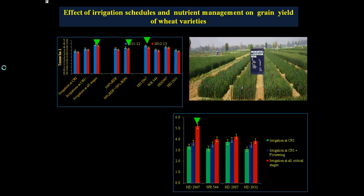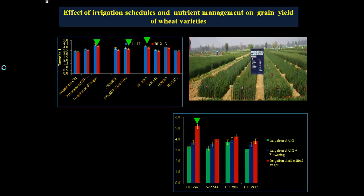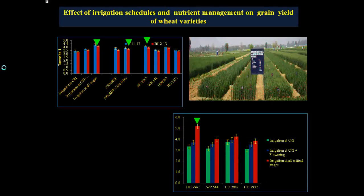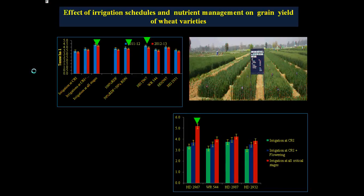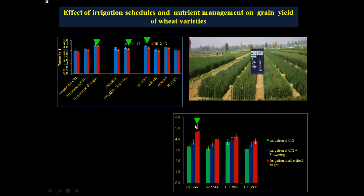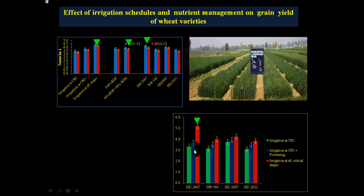When comparing the interaction of irrigation and variety — irrigation being a very important and costly input, with 70% of water used in agriculture — SD 2967 gave very good results when irrigation was applied at all critical stages. However, when irrigation was reduced to two or one irrigation, the yield drastically reduced.